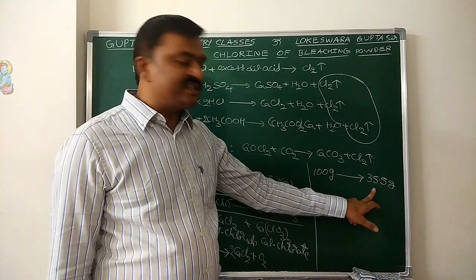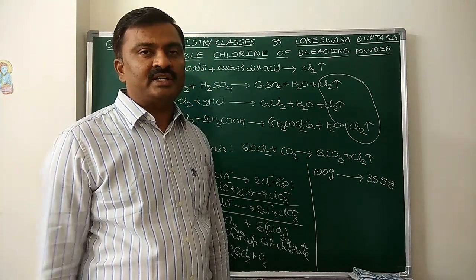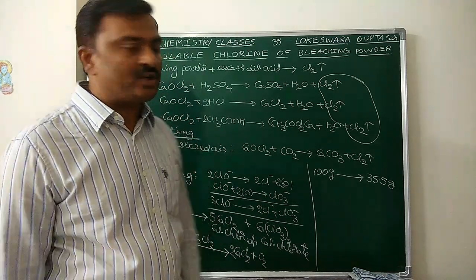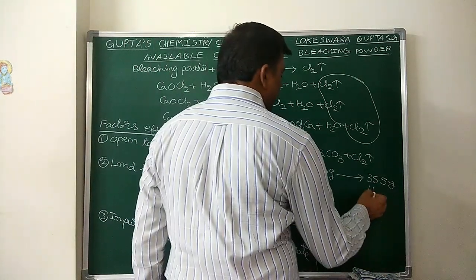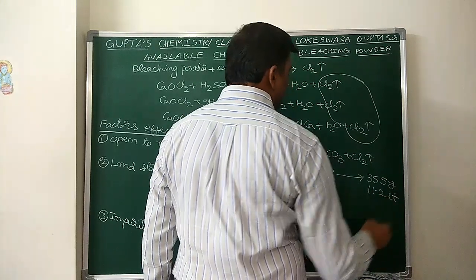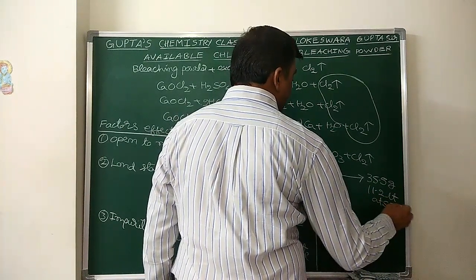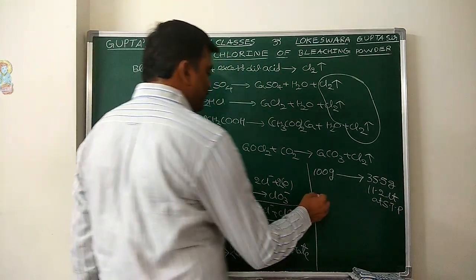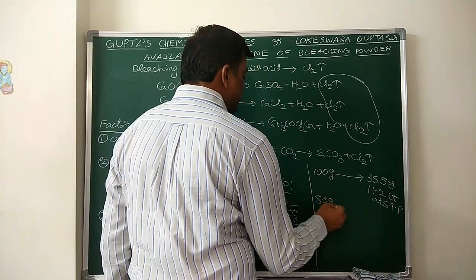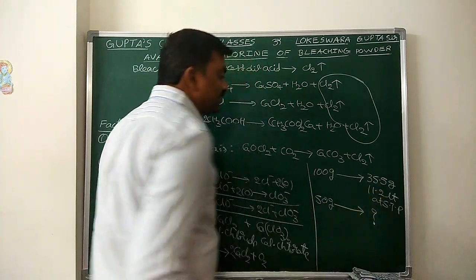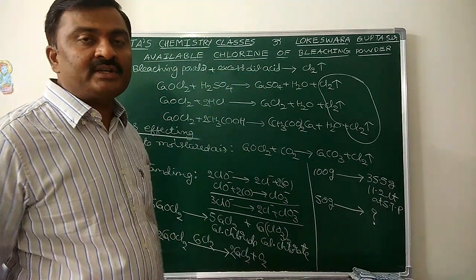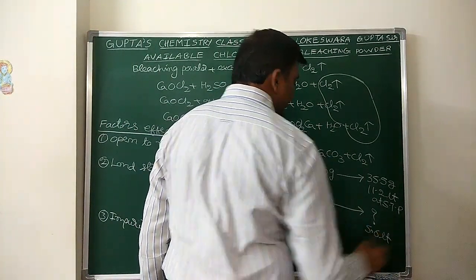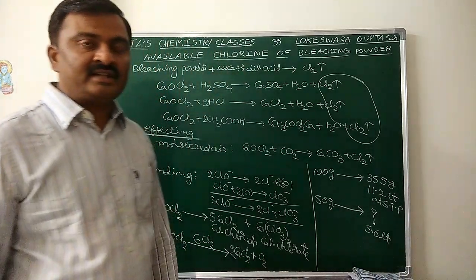35.5 grams of Cl2 is half a mole of Cl2. Half a mole of Cl2 at STP occupies 11.2 liters. But in our question, they said 50 grams of bleaching powder only — 50 grams of a good sample. Then how many liters of Cl2 gas at STP will be liberated? 5.6 liters.